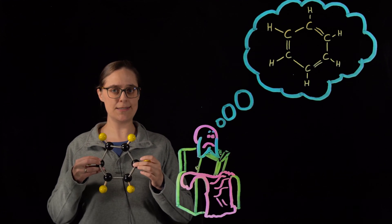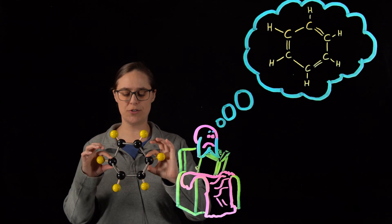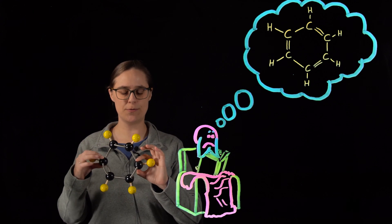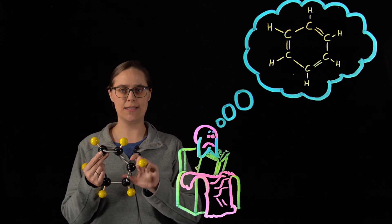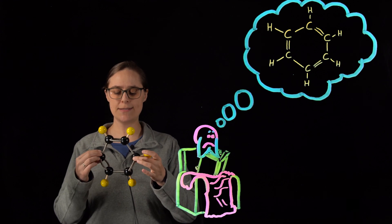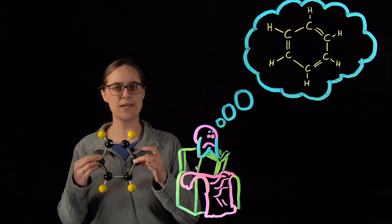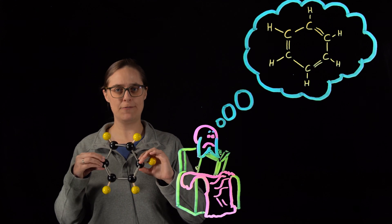So in 1865, Kekulé proposed this structure. We have six carbons in a ring, alternating single and double bonds. This is very close to correct, but it does not paint the whole picture. And in fact, this is in complete disagreement with some of the observations that we had made about benzene at this point in time.